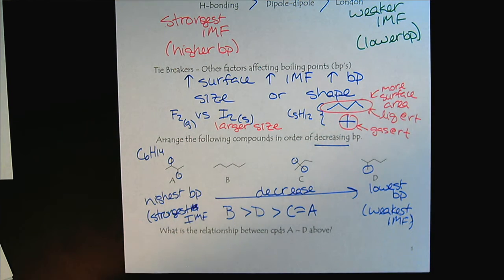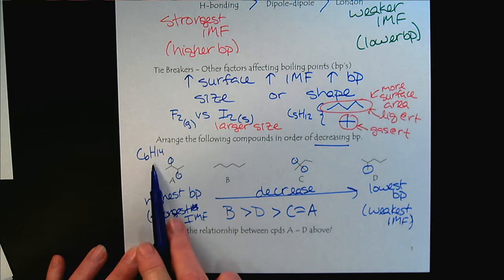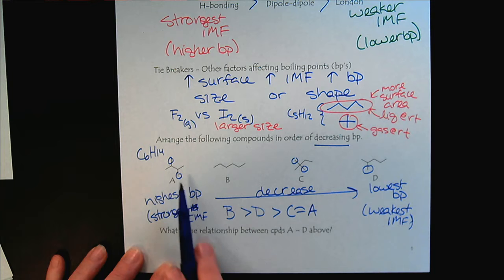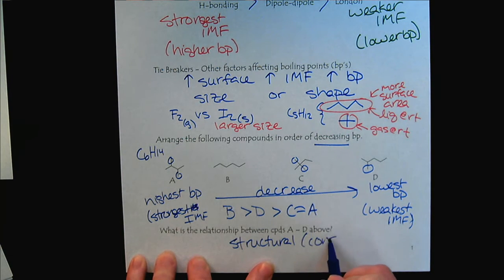And then just to have a bit of a flashback to hydrocarbon structures, what is the relationship between compounds A and D? They all have the same chemical formula. However, their bonding or their connections are different. So remember, that's called the structural or constitutional isomers.